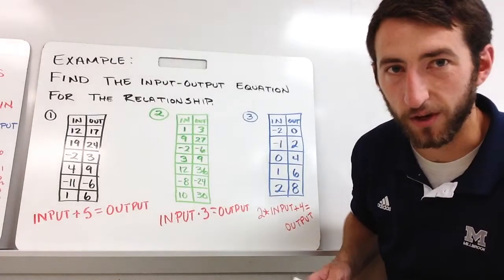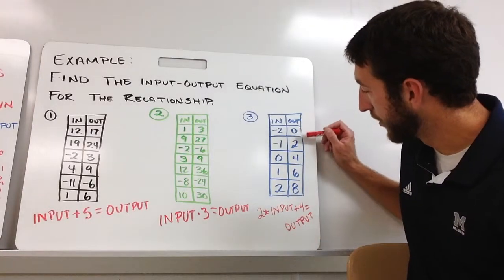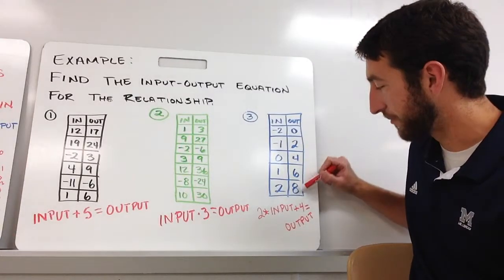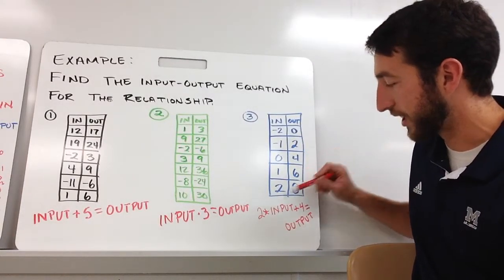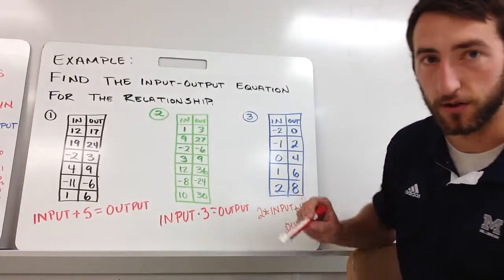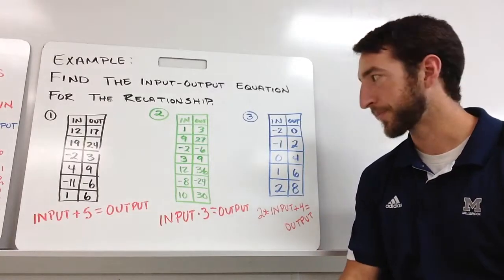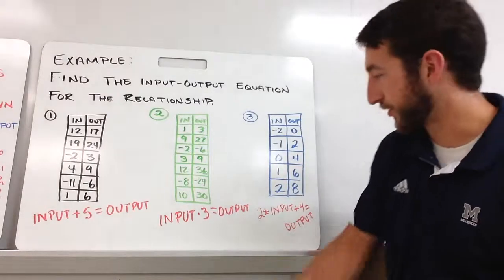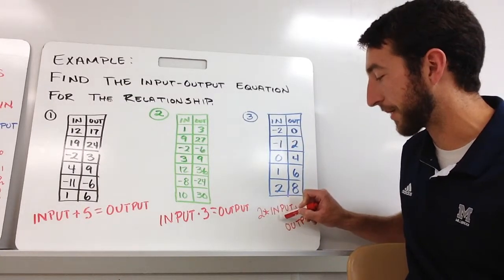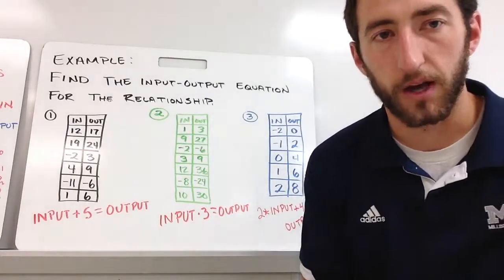Another way to see what we're multiplying by: remember now-next equations — the output is going up by two each time. That increase of two is the same as what we multiply our input by. There's a relationship between now-next and input-output equations that's very important for this unit. The rate of change is your multiplier, then figure out what you're adding. And that is input-output equations.